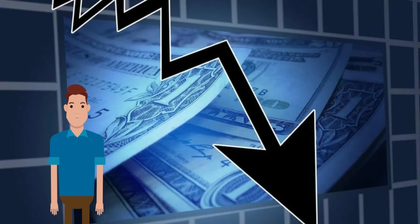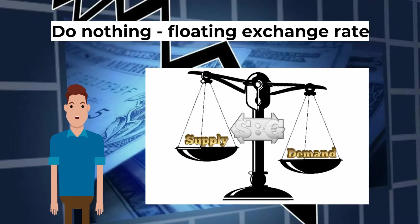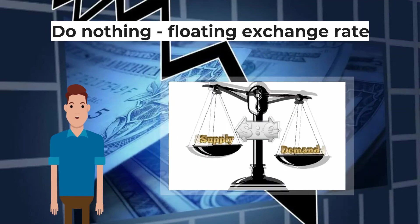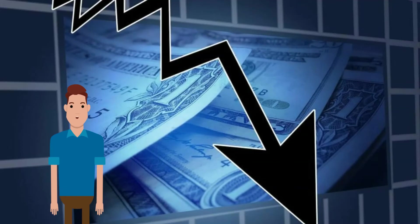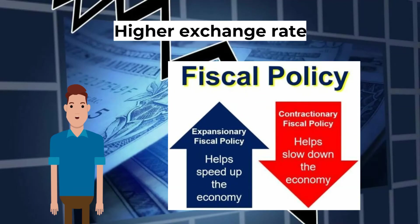How do we correct a current account deficit? Do nothing — because a floating exchange rate should correct it. If there is a trade deficit, a depreciation will occur as more currency is being spent than received. Depreciation will make imports more expensive and exports cheaper, so domestic demand for imports will fall and foreign demand for exports will rise, reducing the deficit.